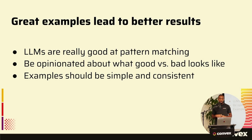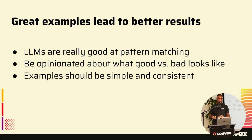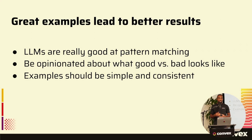The next thing is being really opinionated about what good versus bad looks like. There are a lot of ways to do something good and a lot of ways to do something bad. When working with LLMs, it's important to find the way you think something should be done and have all the examples follow exactly that approach. That way, when an LLM is writing code or doing whatever your product calls for, it knows it should be doing this specific thing. Examples should also be simple and consistent — each example should be very clear about a certain competency you're trying to give to the agent, so it can follow these patterns in different situations.